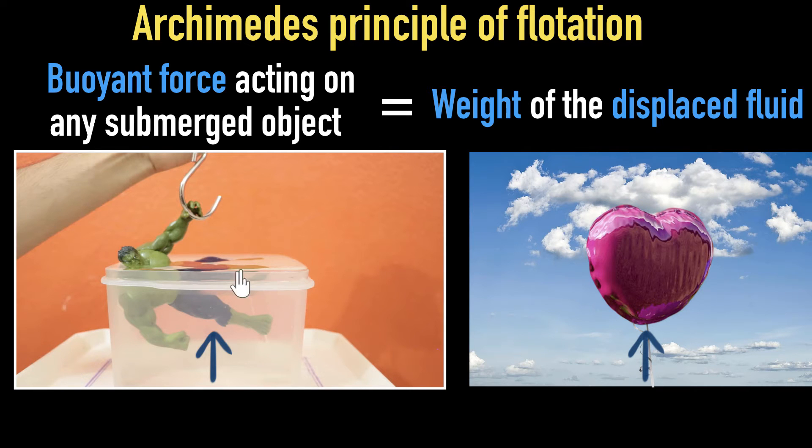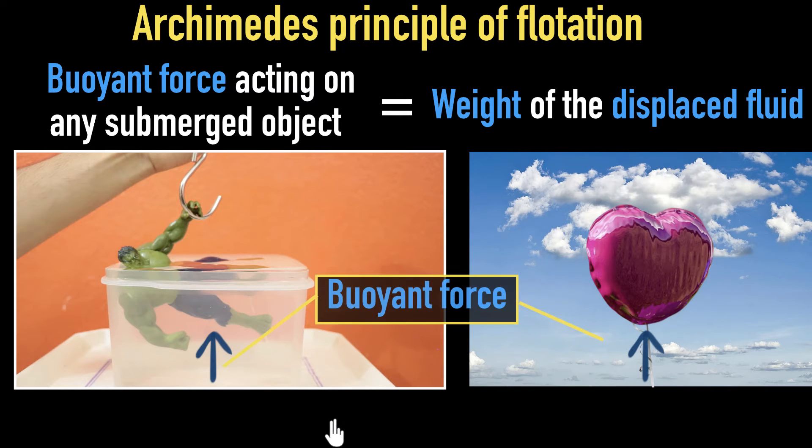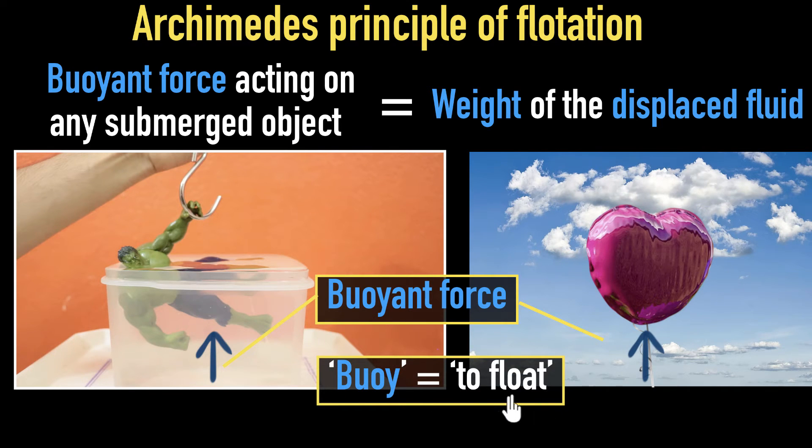So this means whenever we have objects submerged inside liquids or gases, which are collectively called fluids, by the way—fluid means anything that can flow, liquids or gases—they have a natural tendency to push up on things. And that force is what we call buoyant force. And the word buoy means to float. I think it has a Dutch origin. But it's called so because this force is literally what makes them float. This is what's pushing them towards the surface, trying to make them float.